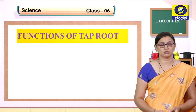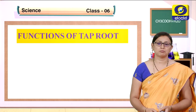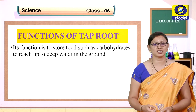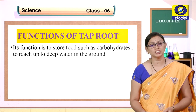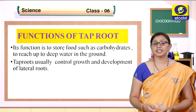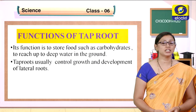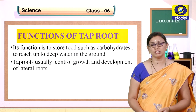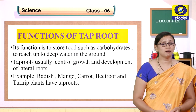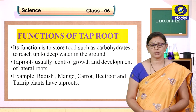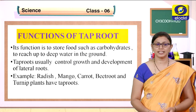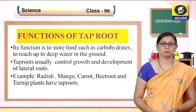What are the major functions of the tap root system? Its function is to store food such as carbohydrates, to reach deep water in the ground, and to control the growth and development of lateral roots. Examples of plants with tap roots are radish, mango, carrot, beetroot, and turnip.